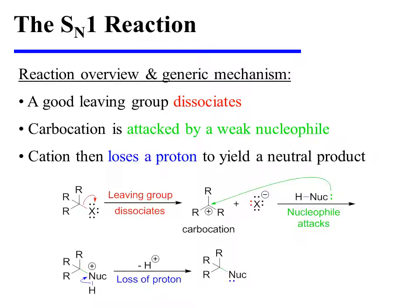During an SN1 reaction, a good leaving group dissociates from a substrate, thereby forming a carbocation. This carbocation is then attacked by a weak nucleophile. In many instances, the weak nucleophile will be neutral, so that after it adds to the carbocation, it will acquire a formal positive charge. In these instances, the nucleophile will then lose a proton to yield a neutral product.